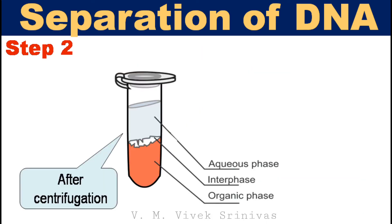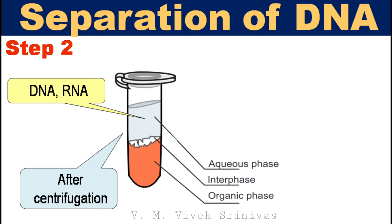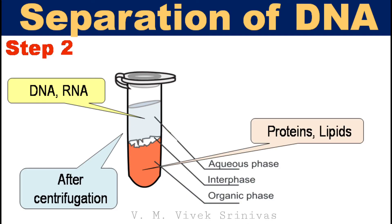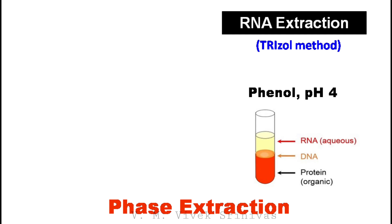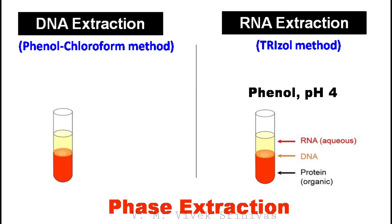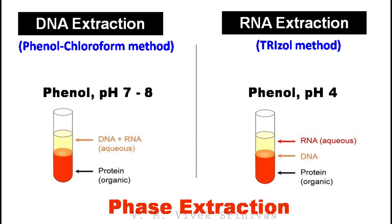After centrifugation, you can observe the phase separation. Nucleic acids — that is, DNA and RNA — stay in the aqueous phase, while cellular proteins and lipids settle in the organic phase. In the phenol-chloroform mixture, the pH is very important for phase separation of nucleic acid. For RNA separation, the pH is kept around 4 (acidic pH), which retains RNA in the aqueous phase preferentially. For DNA separation, the pH is usually 7 to 8, which retains all nucleic acids — DNA and RNA — in the aqueous phase.